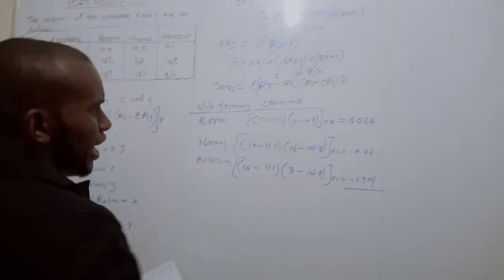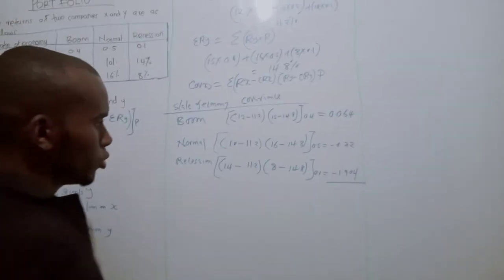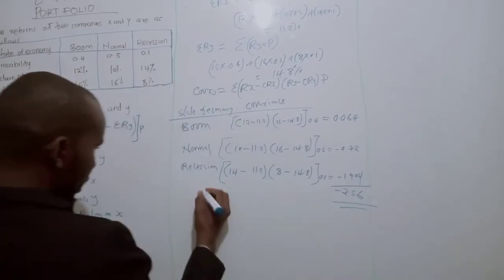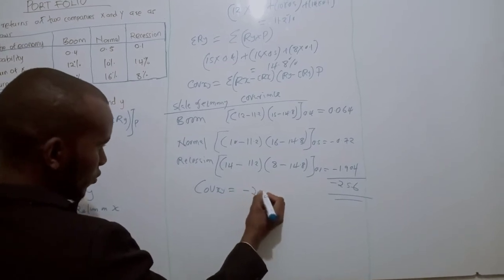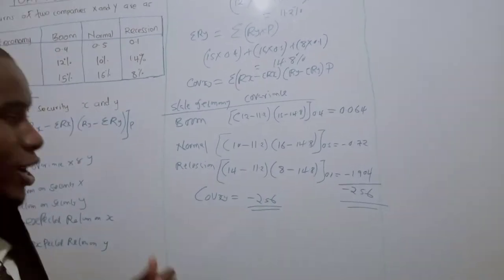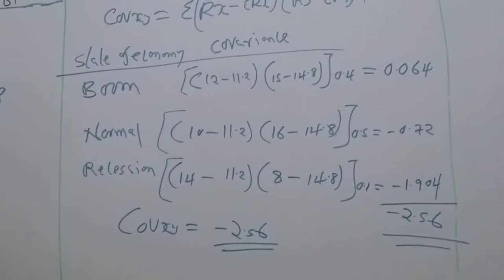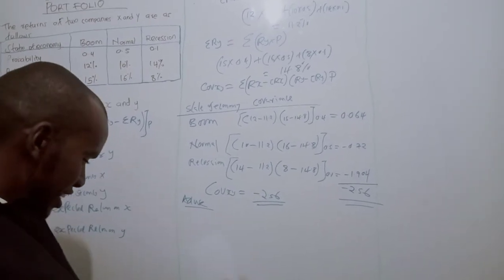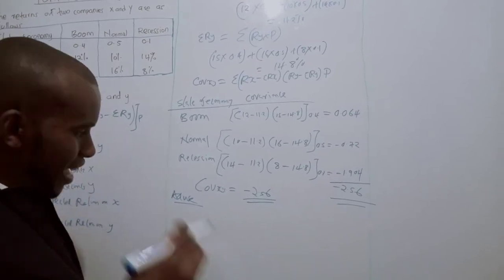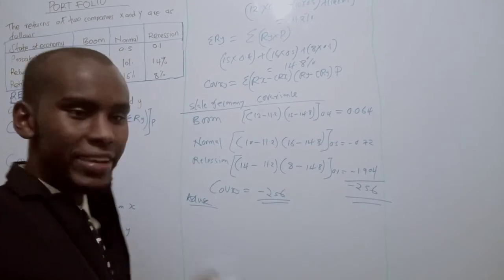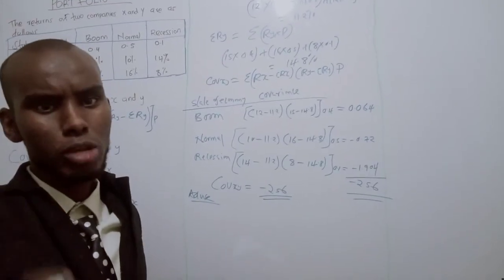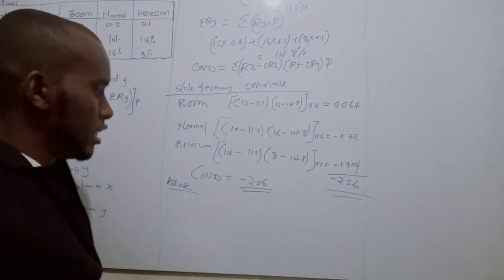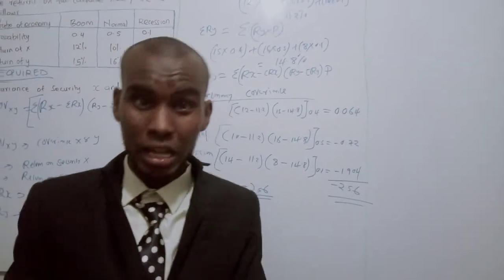To get the covariance, we add: 0.064 + (−0.72) + (−1.904) = −2.56. Our covariance between X and Y is equal to negative 2.56. If you are told to advise, you can say the investor can easily diversify the risk in the portfolio between X and Y since they have a negative relationship. A negative covariance means you can diversify the portfolio.